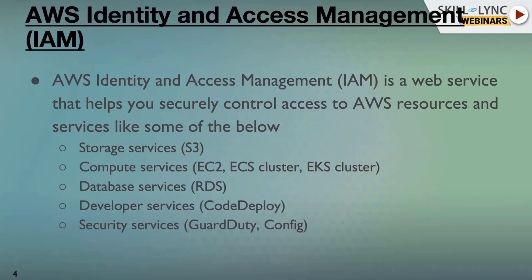Let's understand what IAM, or Identity Access Management, is. It's a concept and a service in AWS, just like any other service. AWS has many categories of services — storage like S3, compute like EC2 instances, containers, Kubernetes clusters, and database services like RDS, MongoDB, or Aurora DB. IAM is one such service category, completely focused on the authorization level. IAM comes into picture once a user logs into a particular AWS account or has access to an account.